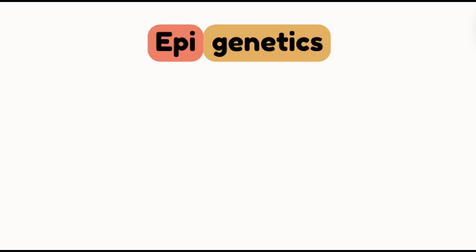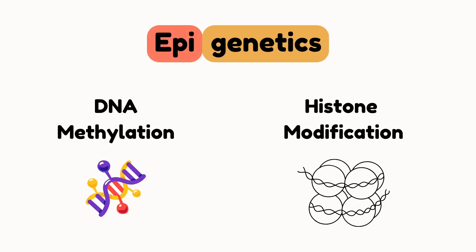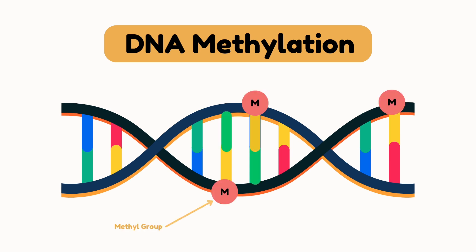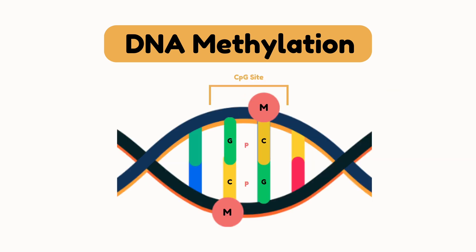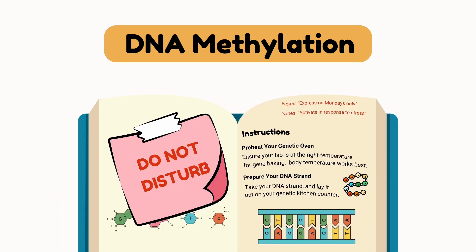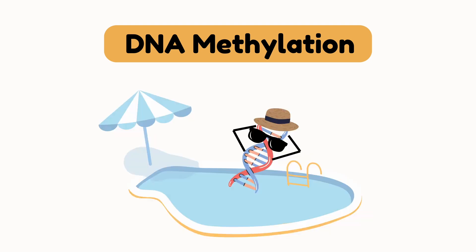There are two main types of epigenetic modification: DNA methylation and histone modification. DNA methylation involves adding a methyl group to the DNA CpG sequence. Methylation can silence genes by preventing the cell that reads DNA from accessing the gene, turning it off. It's like putting sticky notes on certain recipes — because sometimes genes need their privacy too, right?